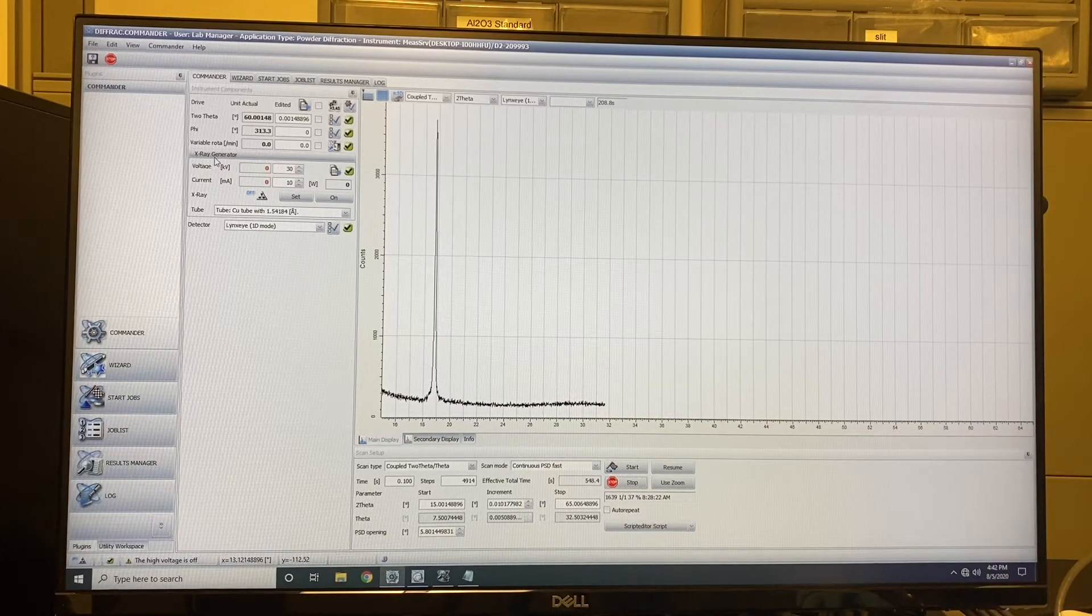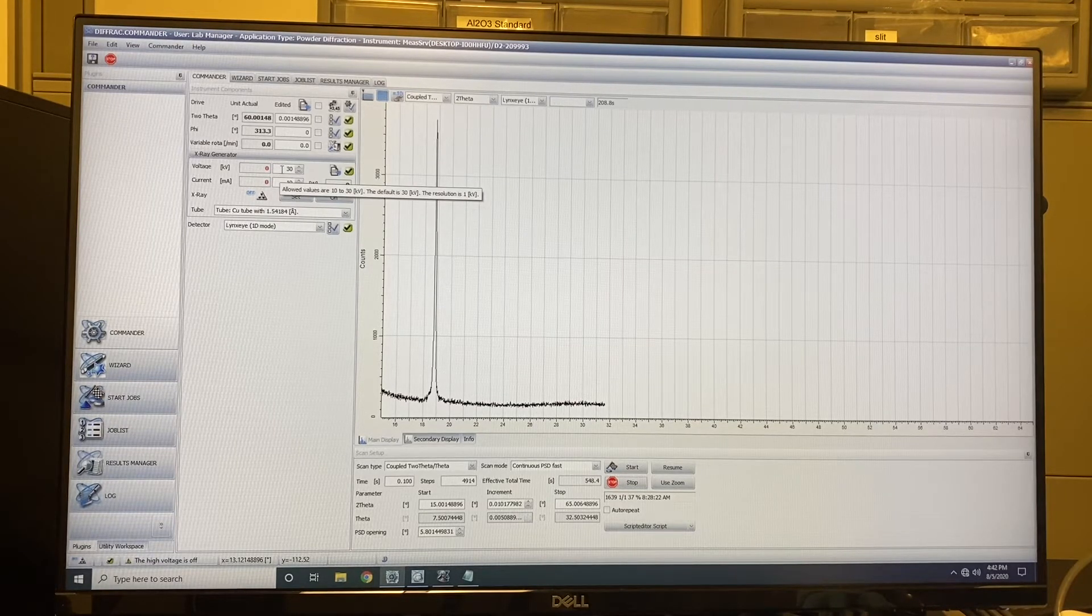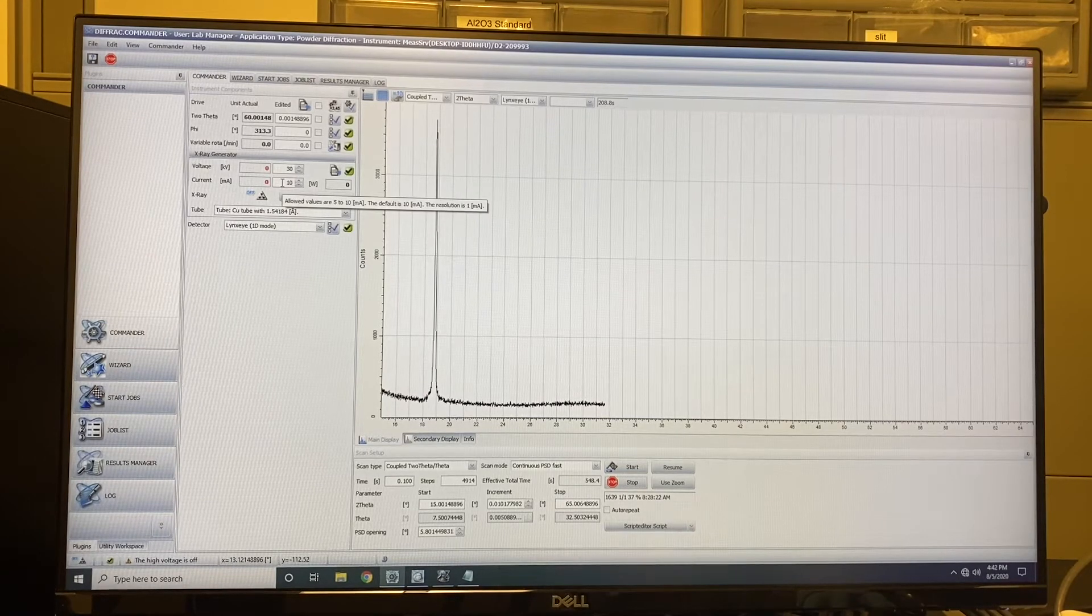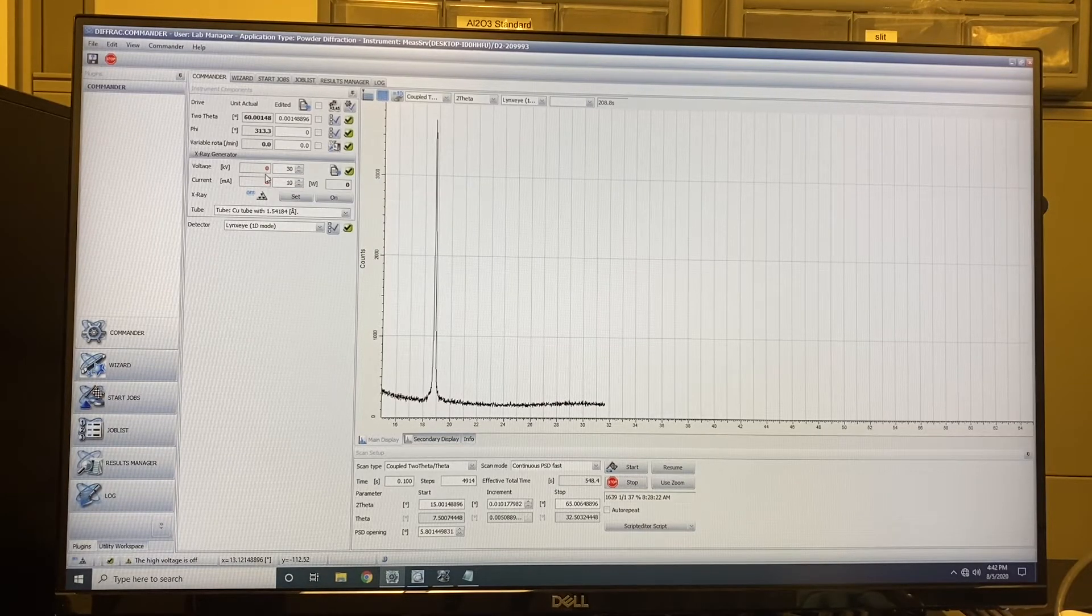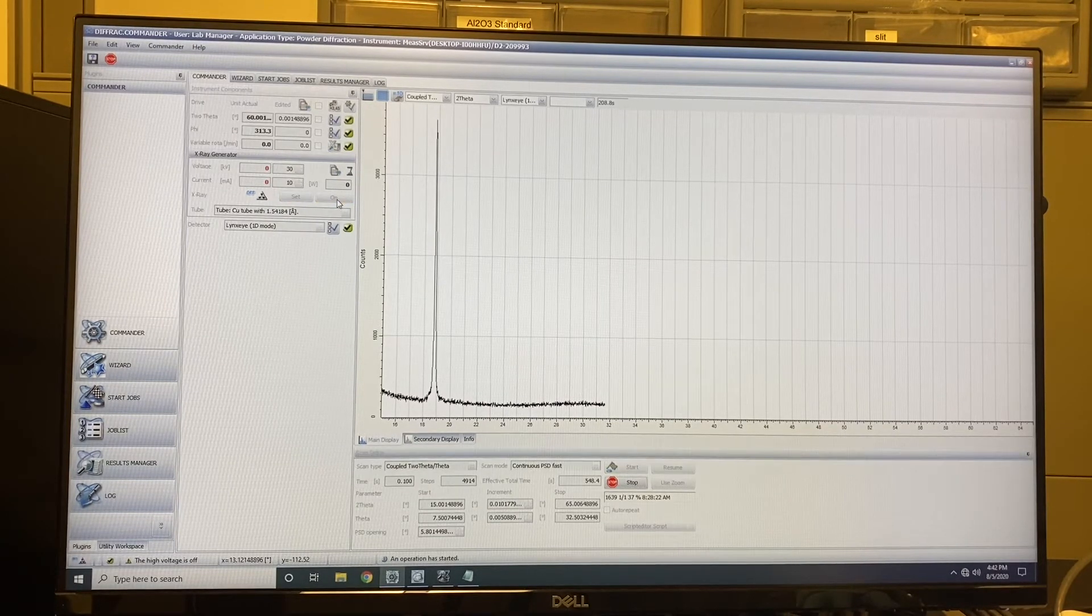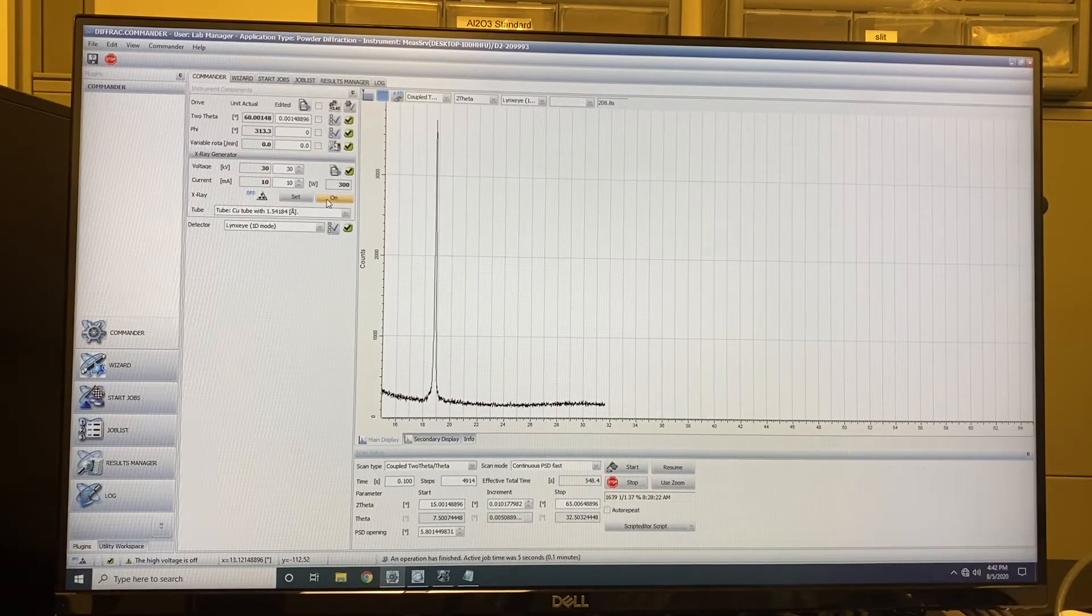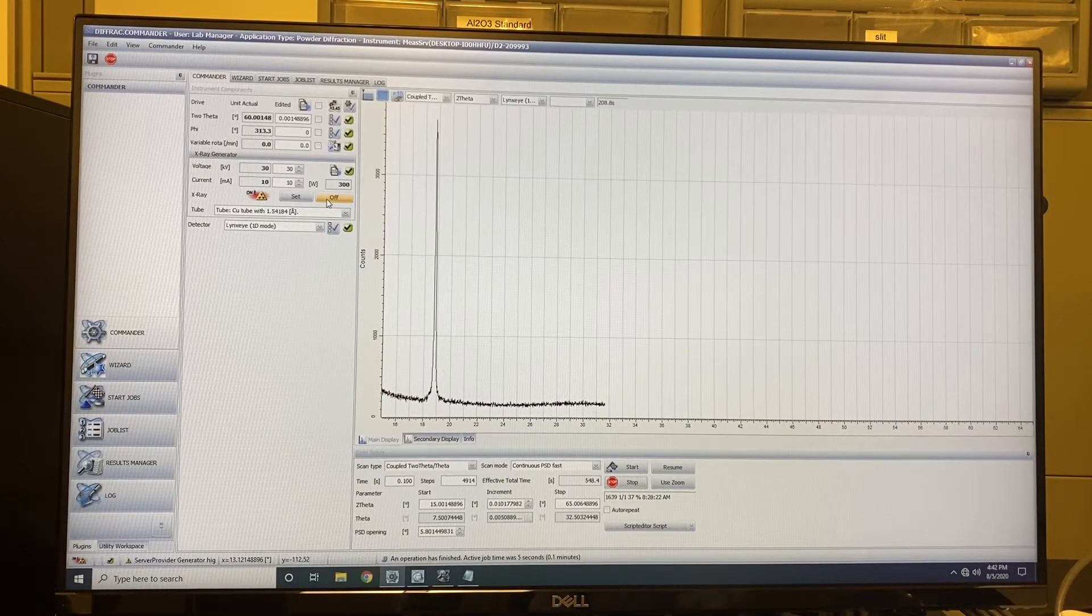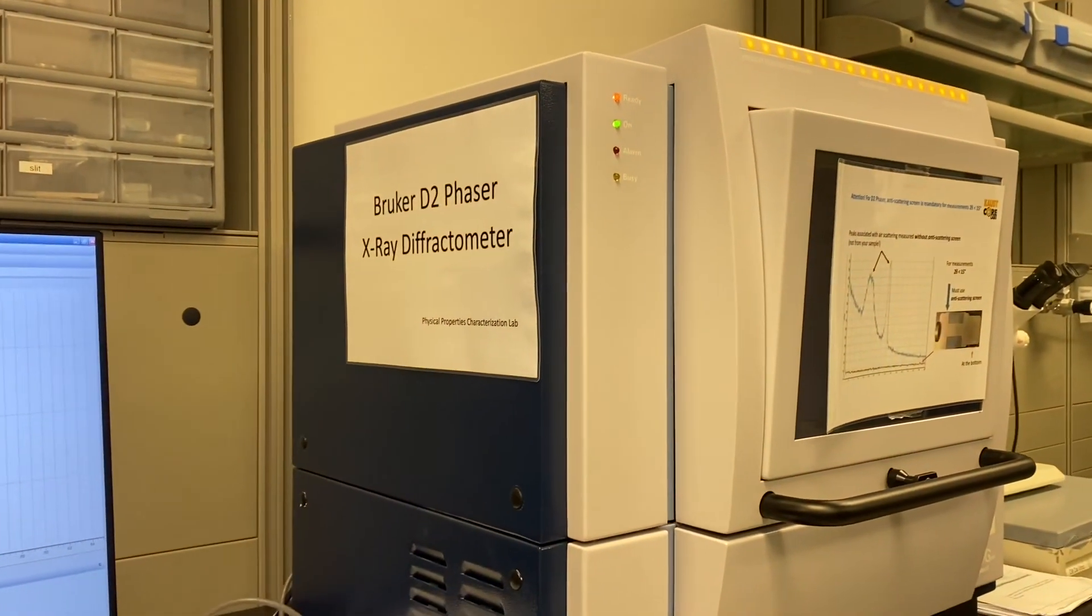And next it is the X-ray generator. Here we will use the voltage is 30 kV, and the current is 10. Before the measurement, for the safety side, the X-ray is always off. So if you want to start the measurement, then you can click on. Wait for one minute, and the voltage and current will go to the target value. And here you can see the X-ray light is on.